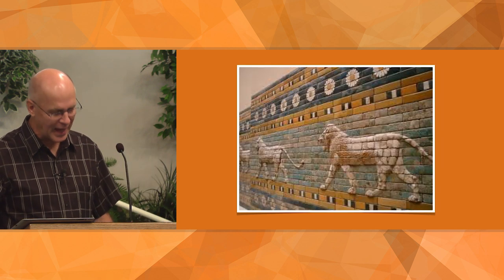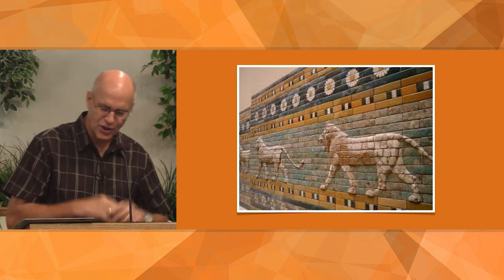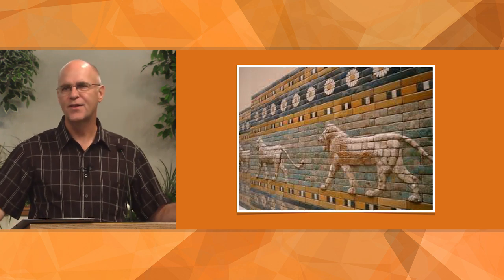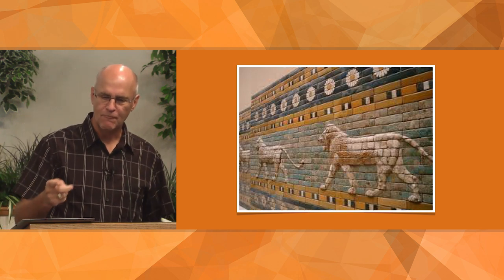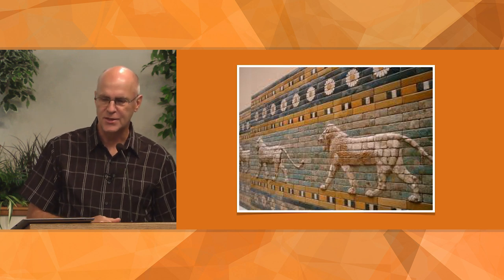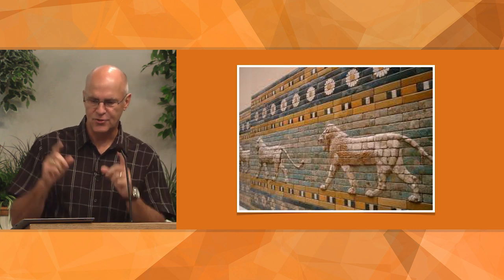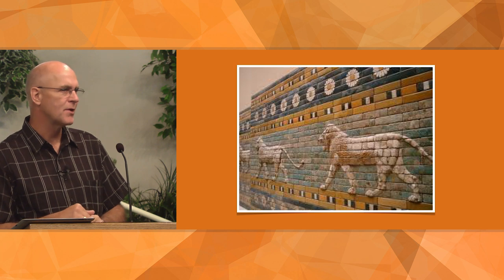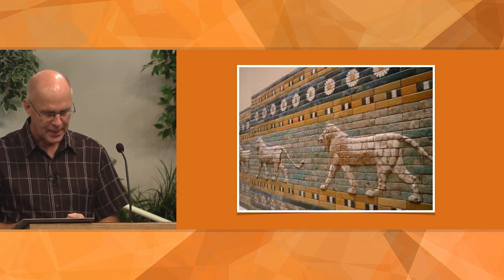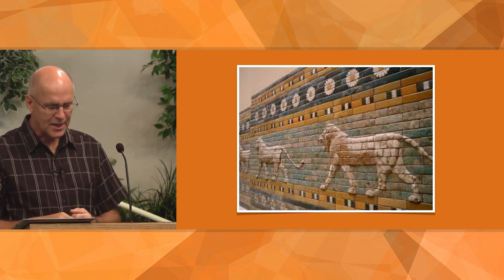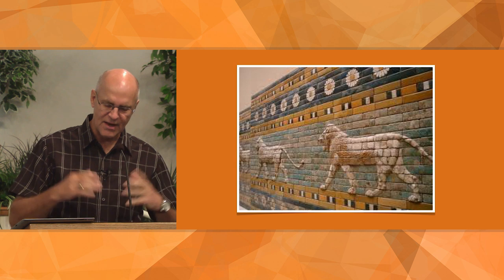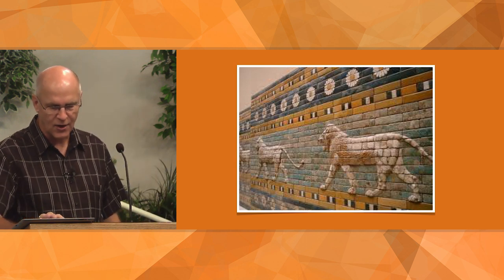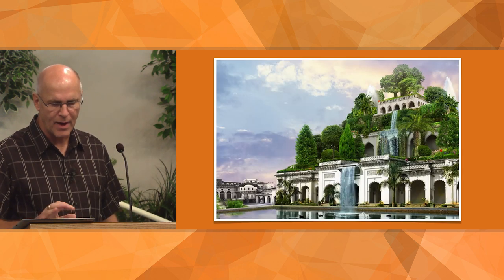Nebuchadnezzar's palace was huge, with walls 50 feet thick. There are still remnants of it left. Nebuchadnezzar also built one of the seven wonders of the ancient world — the Hanging Gardens of Babylon. Some scholars and archaeologists say these were actually built in Nineveh; there's a little debate, but most historians believe the Hanging Gardens were in Babylon.